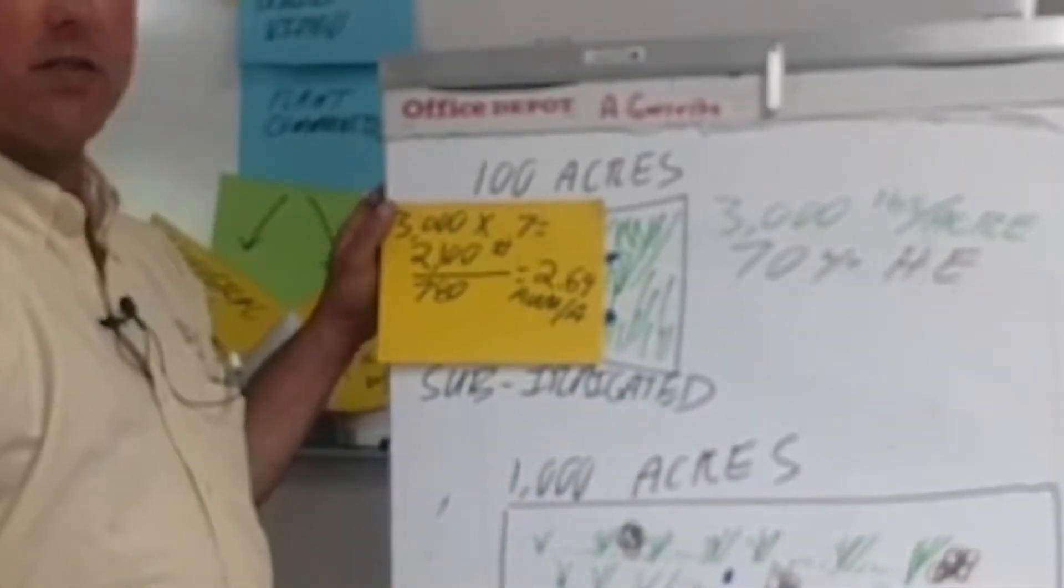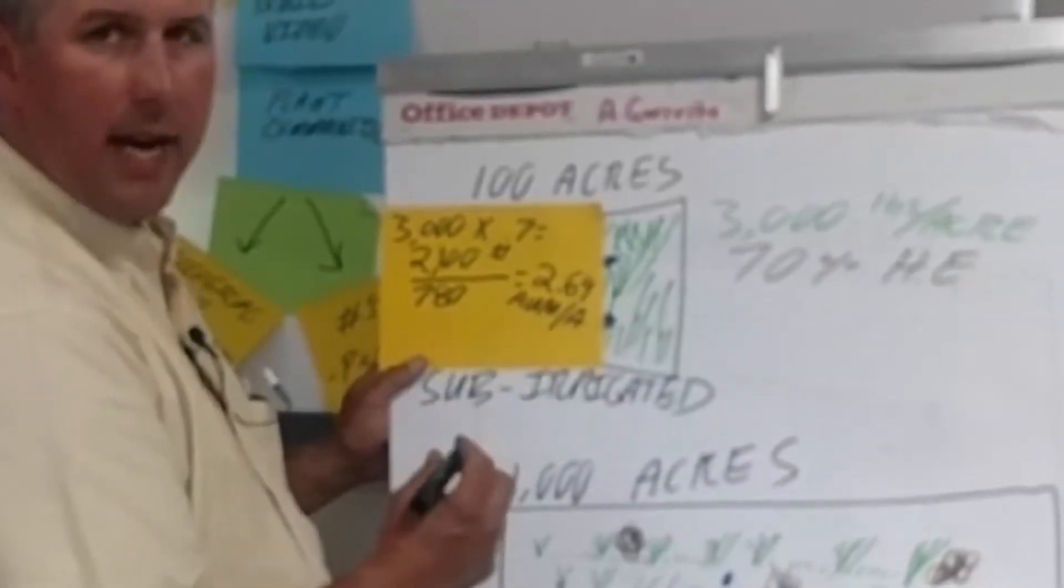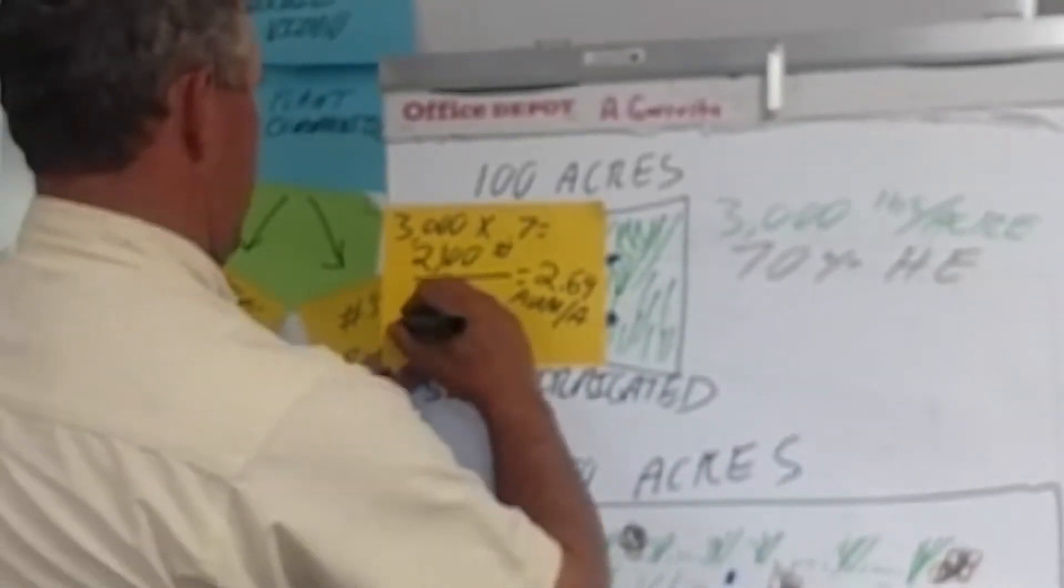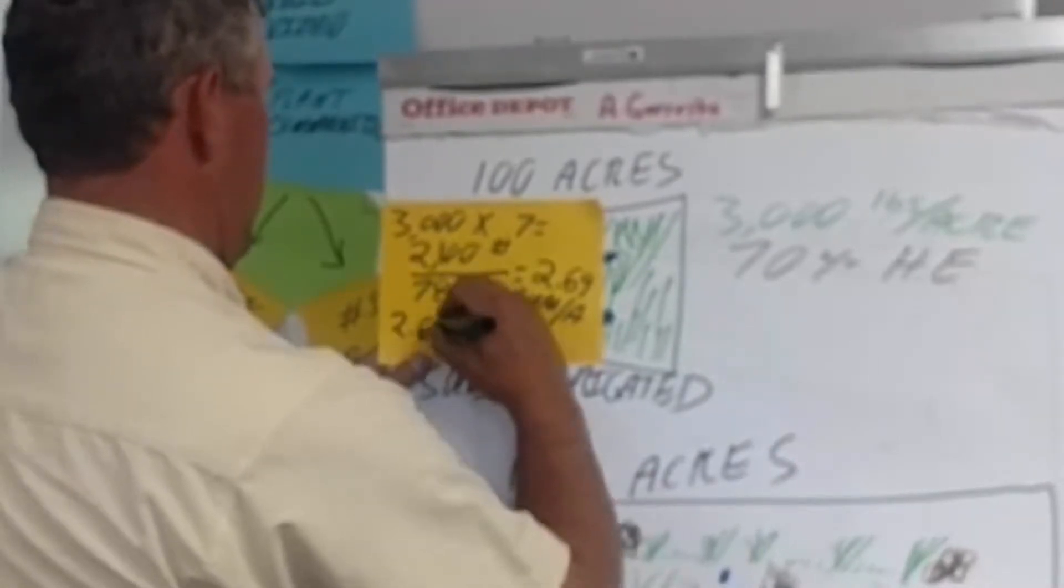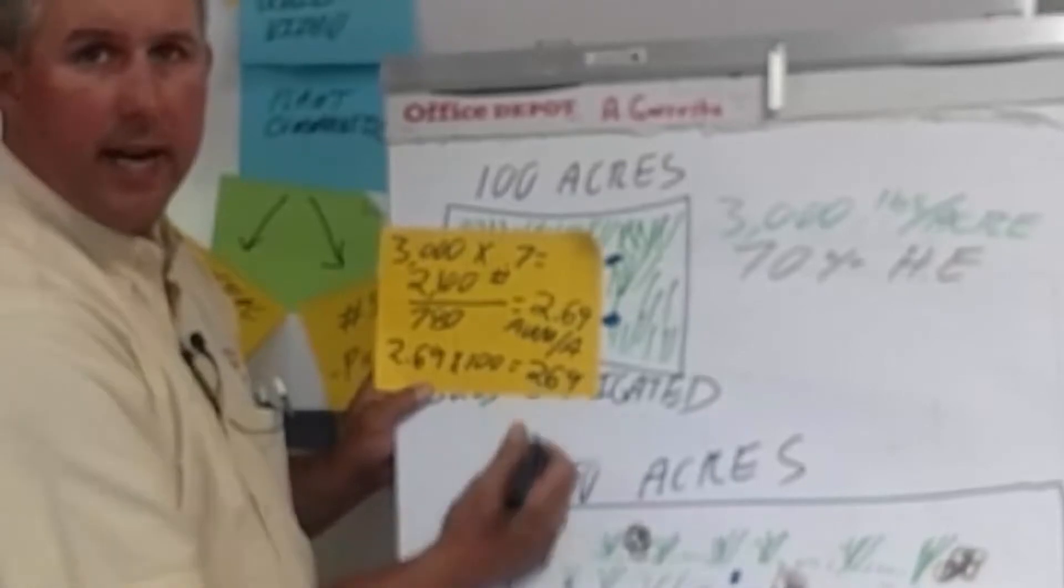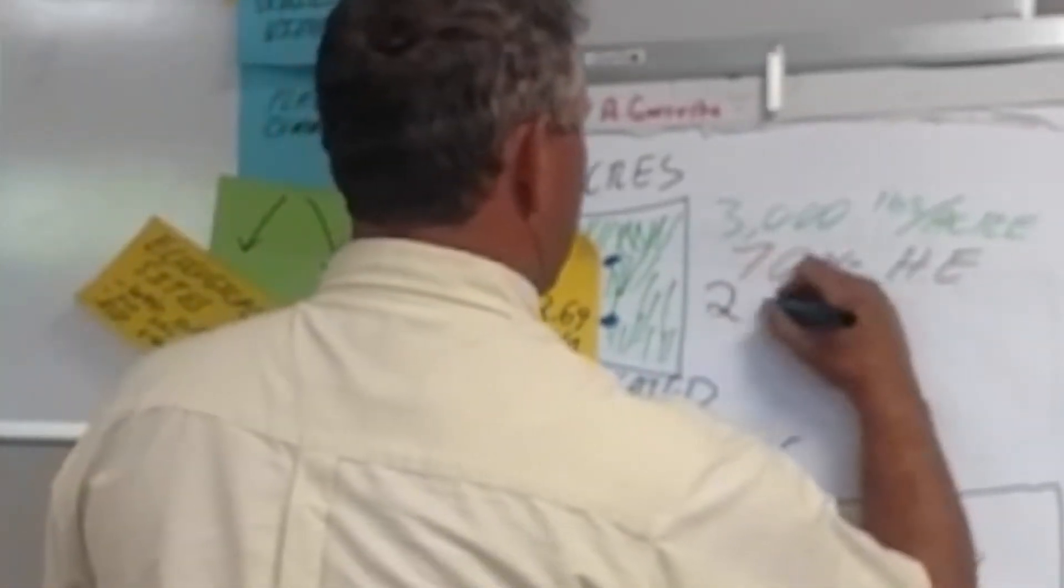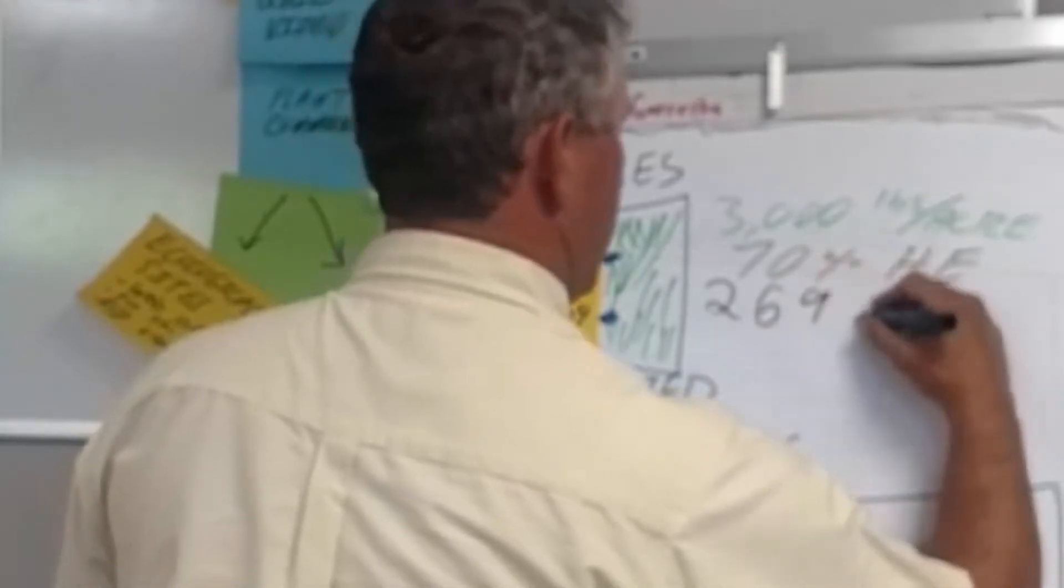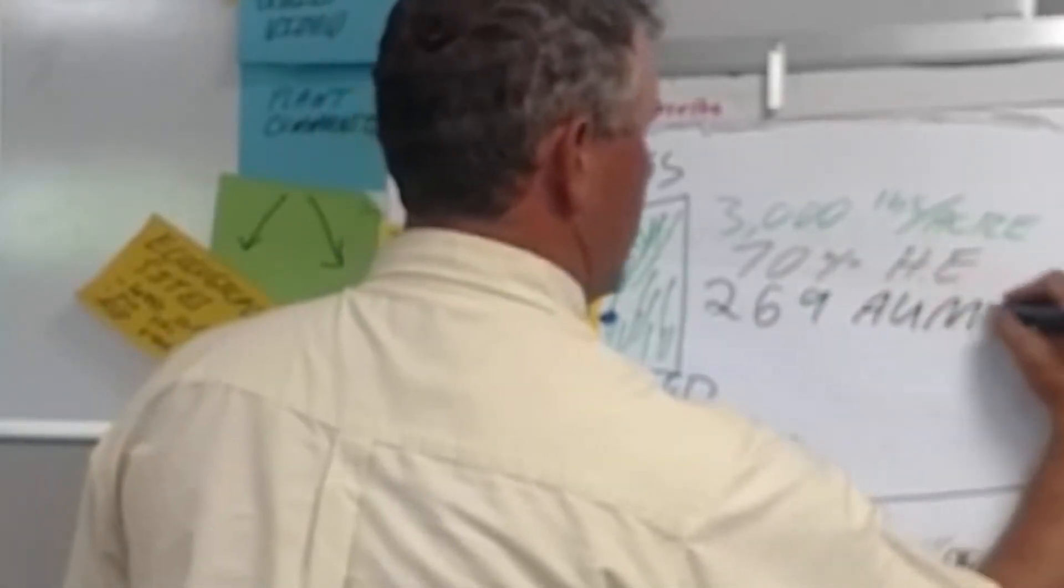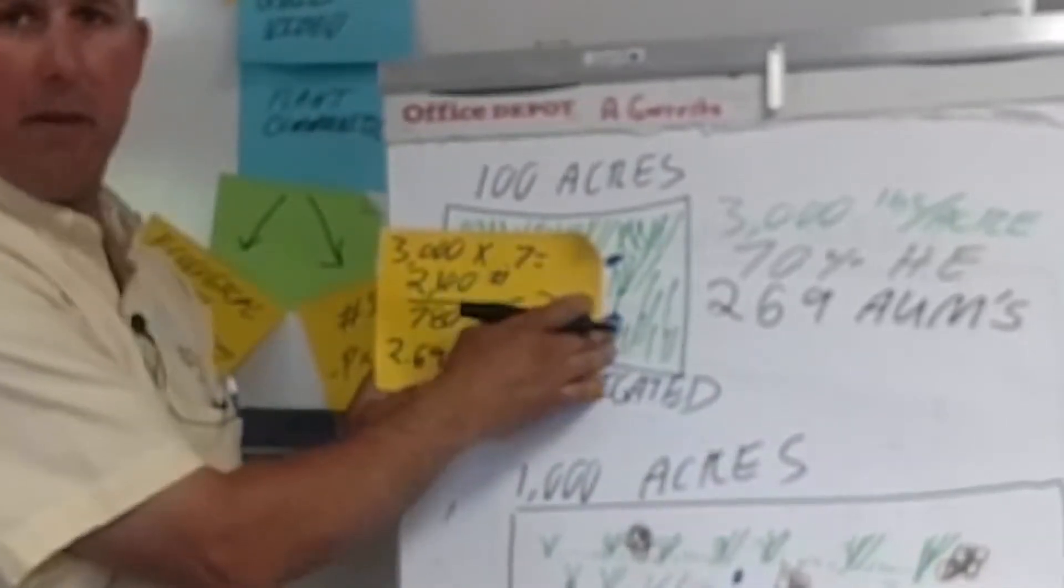We had 100 acres. What's our total AUMs in this pasture? 2.69 times 100 gives us 269 AUMs from this pasture. That's our total annual production from that pasture.